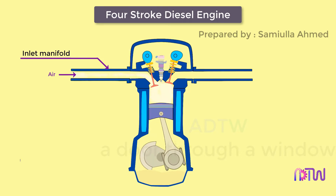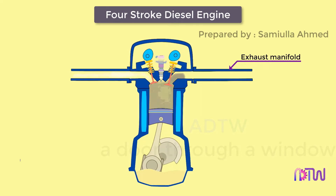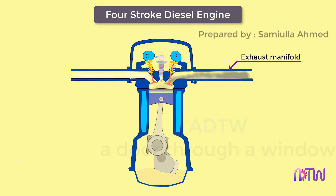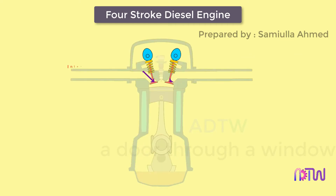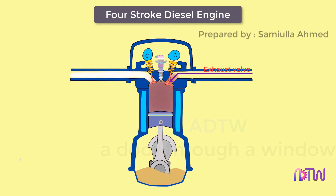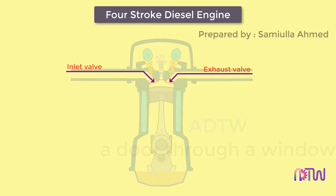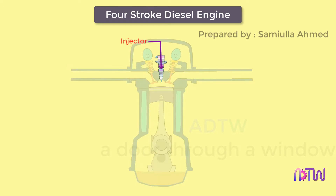The exhaust manifold connects the combustion chamber to the exhaust system of the engine, through which the products of combustion are expelled from the cylinder. Inlet and exhaust valves are commonly mushroom-shaped and regulate flow: the inlet valve regulates the incoming air into the cylinder, and the exhaust valve regulates the products of combustion going out. The injector injects diesel fuel into the combustion chamber and is usually located on the cylinder head.